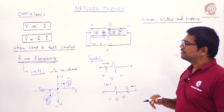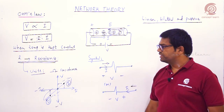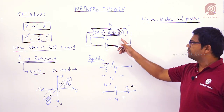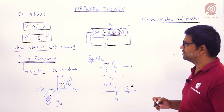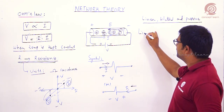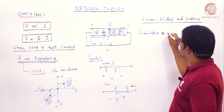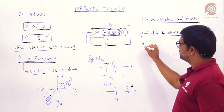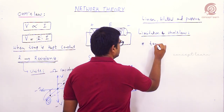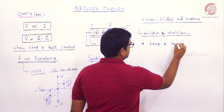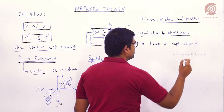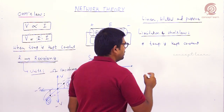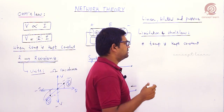The unit for resistance is ohms, named after Simon Ohm. The definition of resistance is the obstruction to the flow of free electrons. The major limitation of Ohm's Law is that temperature must be kept constant. If temperature changes, resistance changes. We have the relation: R_T = R(1 + α·ΔT).